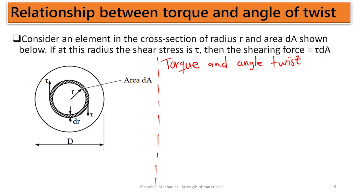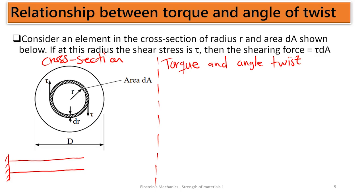We are going to use that formula — we could write it straight away, but it is best we derive the equation. This is just a cross section of a member that I'm going to draw. This is the surface from a member. In this analysis we are going to consider all our members to be circular members. This is the bar and we are applying a torque T to twist the member at an angle theta. We are drawing the cross section surface from the first diagram.